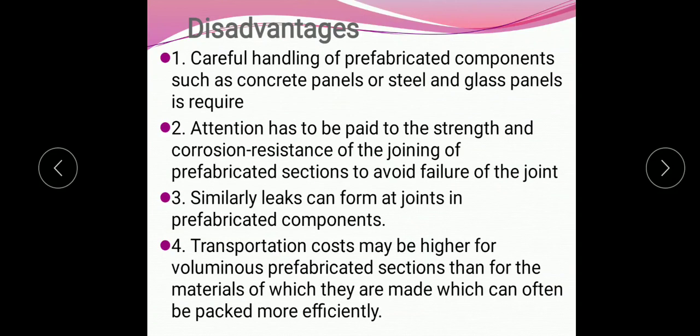Though prefabrication offers numerous advantages, there are disadvantages also. Prefabricated elements or components require careful handling, such as concrete panels or steel and glass panels. We have to pay more attention to the strength and corrosion resistance of the joining of prefabricated sections to avoid failure at the joint. Similarly, leaks can be formed at joints in prefabricated components, so waterproofing is required at the joint. The transportation cost may be higher for voluminous prefabricated sections than for the raw materials of which they are made.